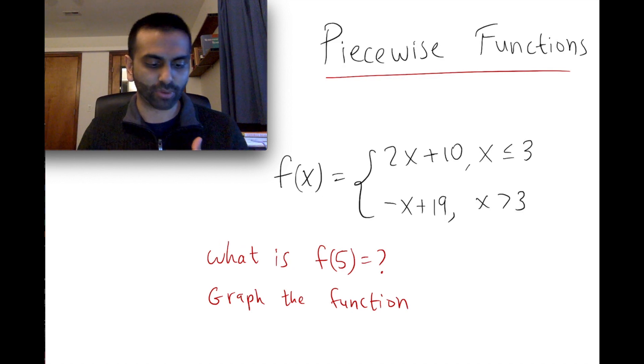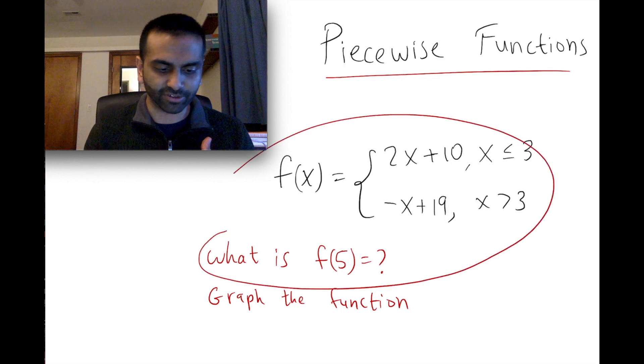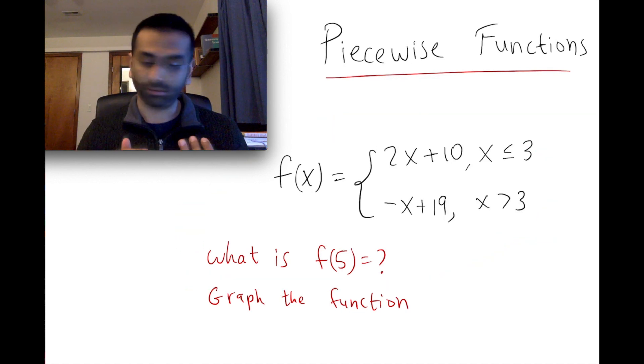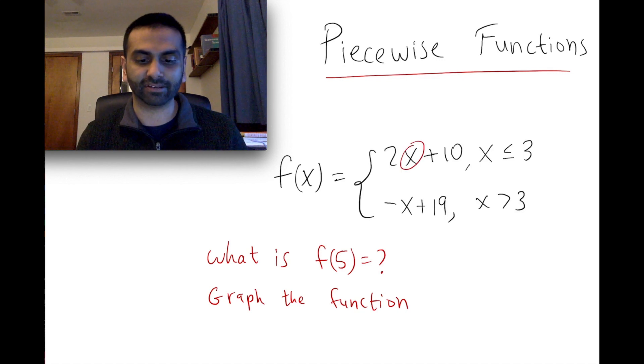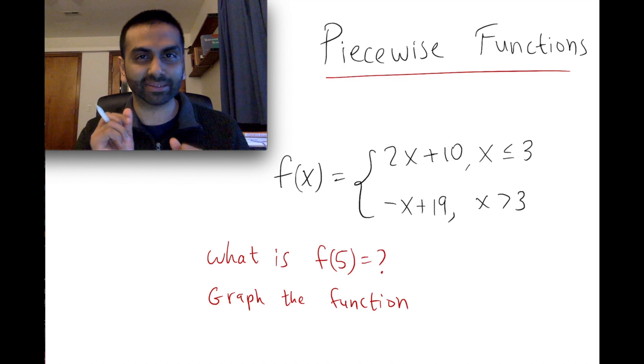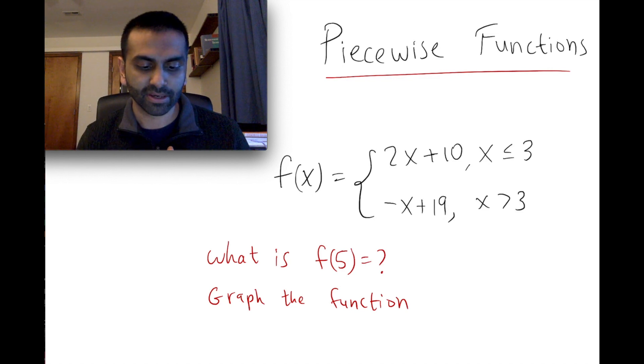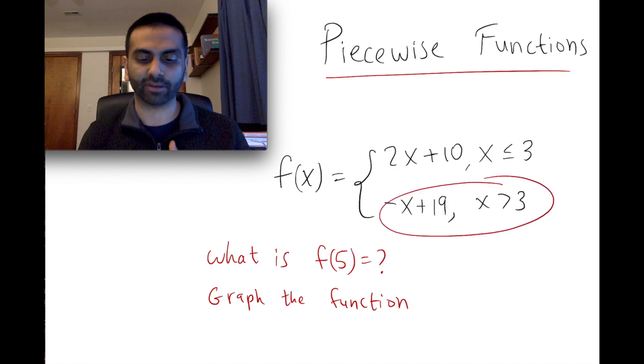So first of all just a simple question. With this function if you're asked what's f of 5 equal to, a lot of people will say oh yeah f of 5 so I just plug in 5 for x and then evaluate it. But the one thing you got to do first is make sure you're plugging it into the correct domain. This only applies for x values less than or equal to 3. Since 5 is greater than 3, it's the second domain that we're going to work in.